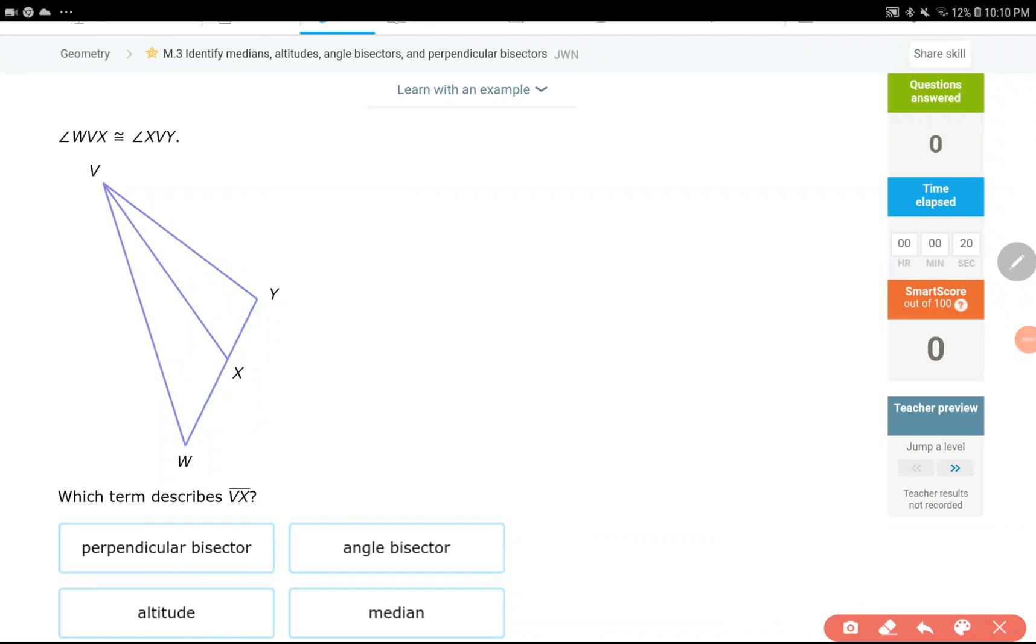Hello everyone, in the second assignment of the week, we are going to talk about how to identify medians, altitudes, angle bisectors, and perpendicular bisectors. We are working on IXL, the assignment is M3.